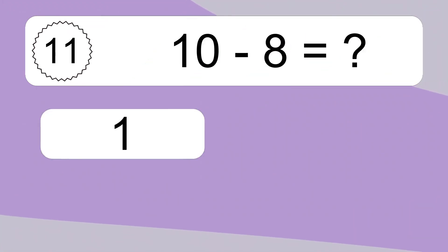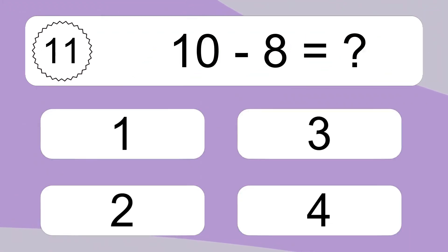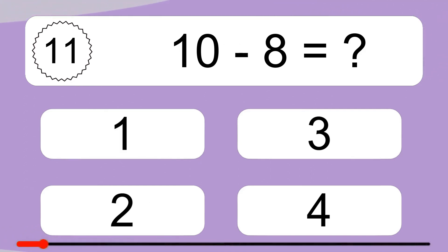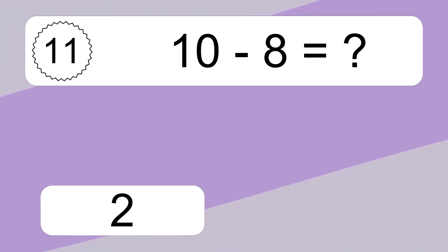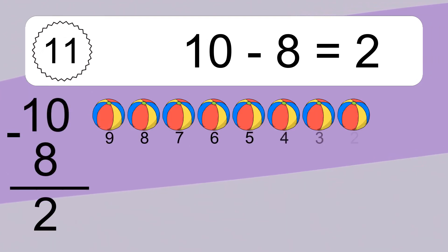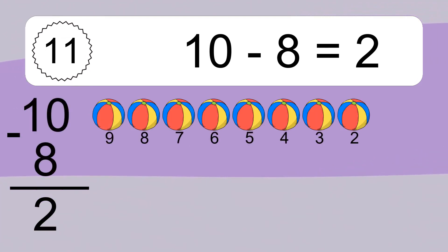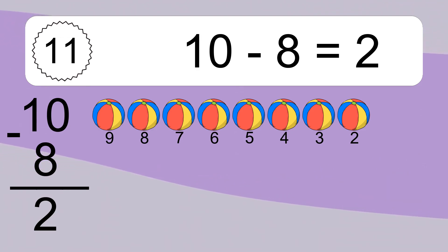Ten minus eight equals what? Ten minus eight equals two. Let's count it: nine, eight, seven, six, five, four, three, two.